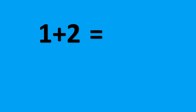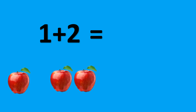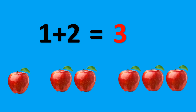1 plus 2. There is 1 apple. Let's add 2 apples. Now we have 1 apple plus 2 more apples. This equals 3 apples. So, 1 plus 2 equals 3.